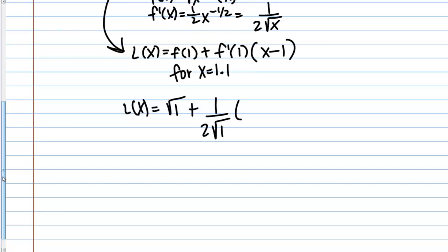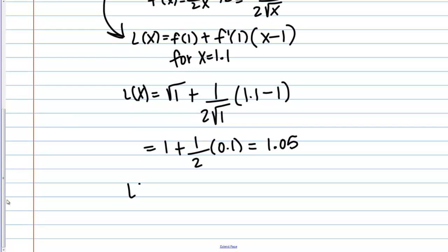Then here we're going to have, for X, 1.1 and then minus 1. If we work that out, we get 1 plus 1 over 2 times 0.1. Which, if you work that out, gives you 1.05. L of X, our linear approximation equals 1.05. What we've just discovered is that the square root of 1.1 is approximately 1.05. This is an approximation to the square root of 1.1 using a linear approximation process.